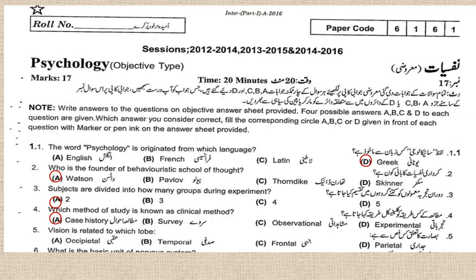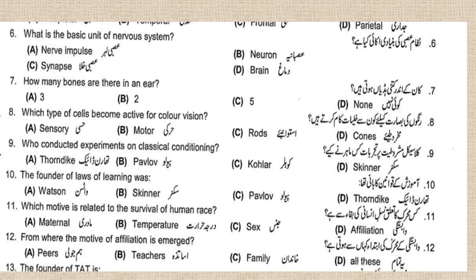Number five: vision is related to which lobe? It is related to the occipital lobe. Number six: what is the basic unit of the nervous system? The neuron is the basic unit of the nervous system.